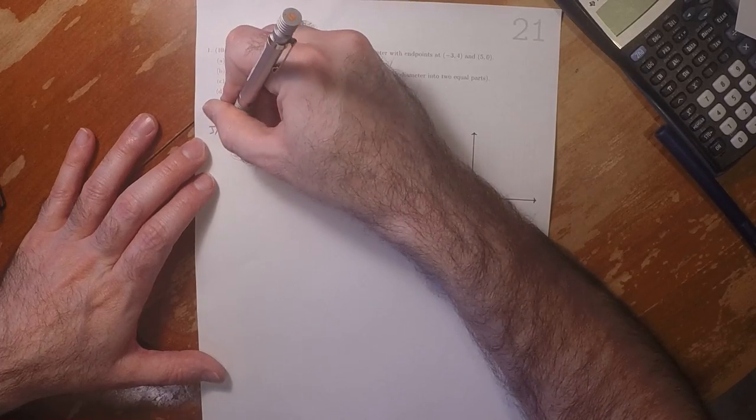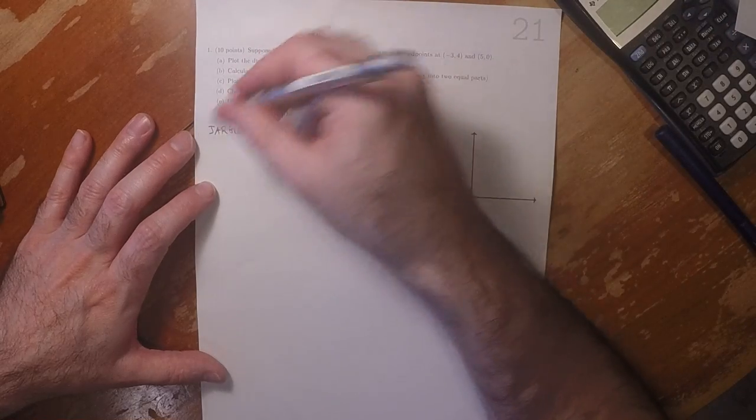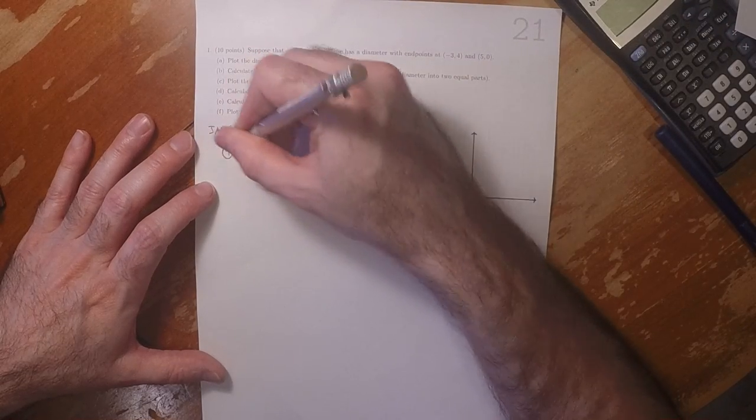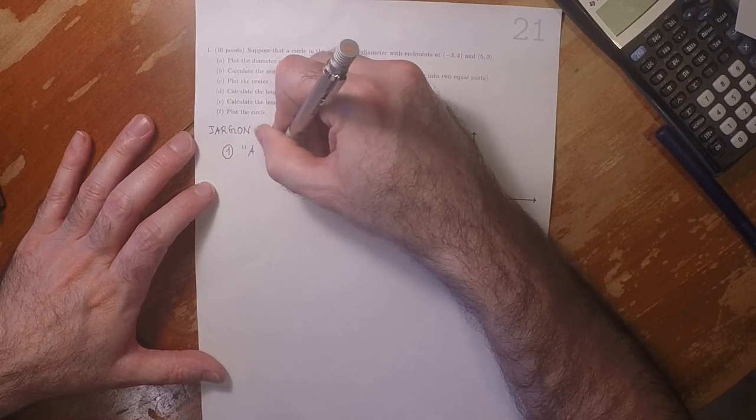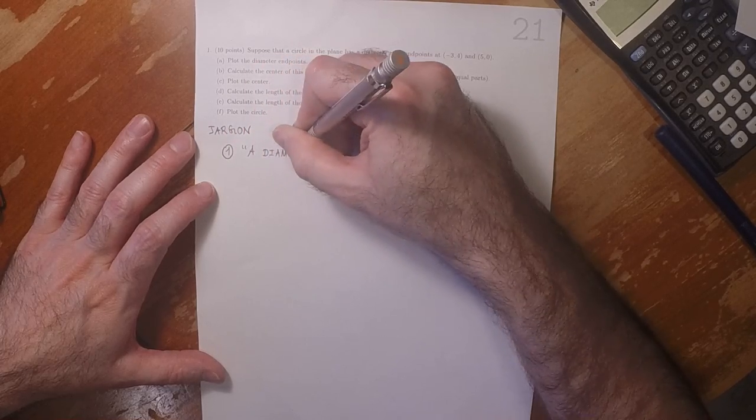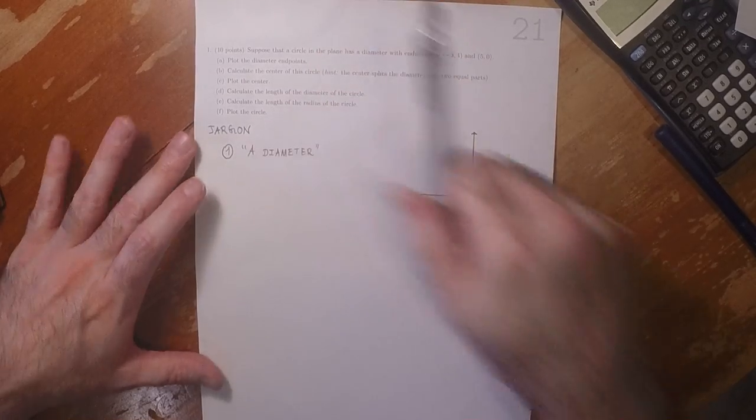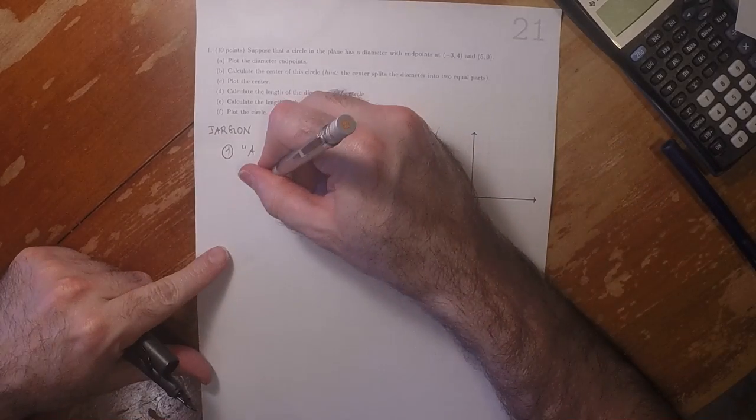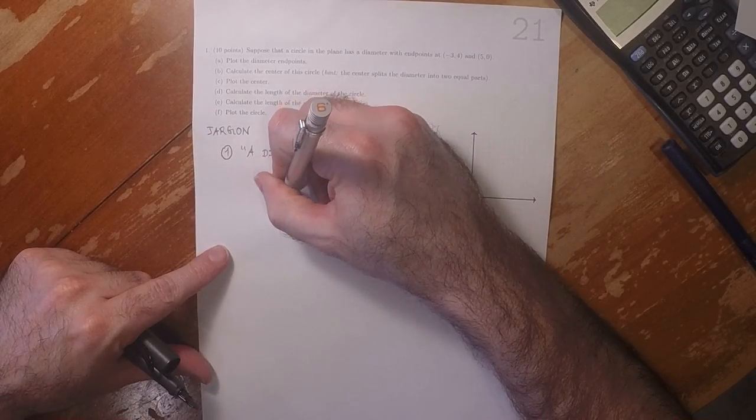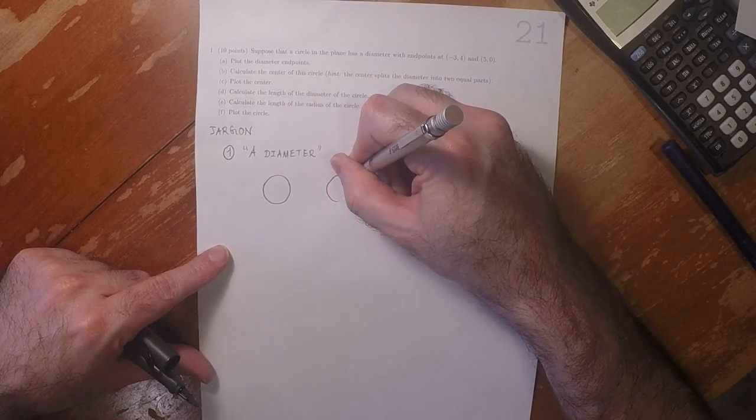a few students were not entirely clear on the jargon associated. So when you say a diameter, this language means that given a circle, so if here's a circle, and this is another copy of the same circle,